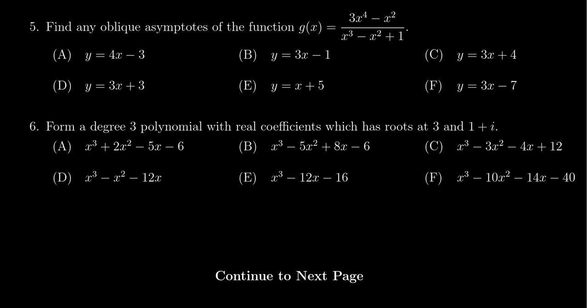We don't need the remainder. Since the denominator is a cubic polynomial, we're going to have to use some long division here, but it's not as long as it might sound. We have 3x to the 4th — there's no x cubed term, so I'm going to skip that — then x squared and no other terms. The divisor is x cubed minus x squared plus 1.